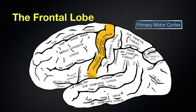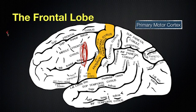As I said before, the boundaries aren't necessarily definitively defined. But in this area here, we have what's called the frontal eye fields. That is involved in the movement of the eyes — specifically, when I look to the left and to the right, my eyes are moving horizontally. The frontal eye fields are involved in the horizontal movement of the eye.